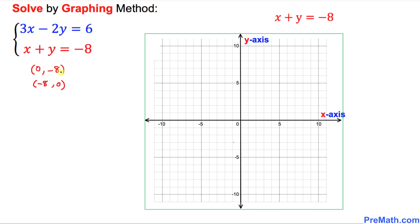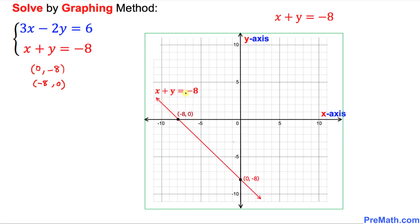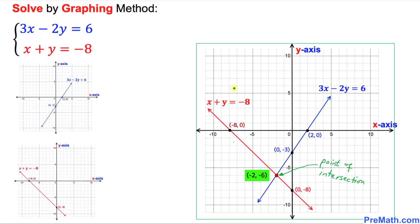Now we plot these two points on the Cartesian plane. The point (0, -8) is on the y-axis, making it the y-intercept. The point (-8, 0) is on the x-axis, making it the x-intercept. We connect these two points to get our straight line. Here is the graph for x plus y equals negative 8.